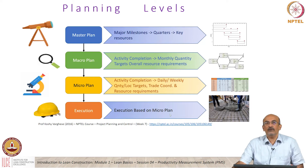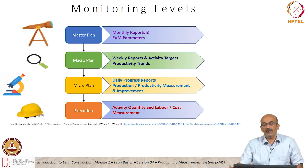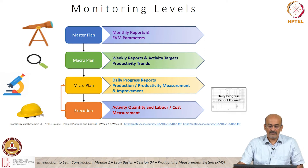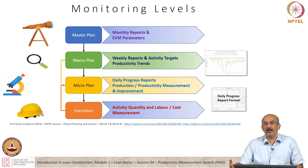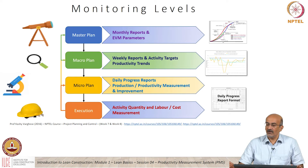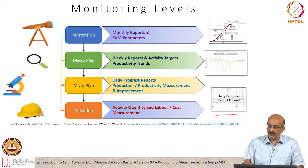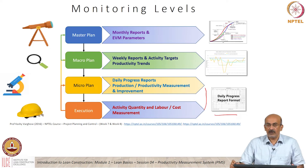When we move on to the monitoring stages, we have a similar framework, but now information flows in reverse. What happens in execution is reported via daily progress reports to the planning team at the next level, then to the macro plan level where different reports are generated, and finally to the master plan level as project-level reports. At the base level, the daily progress report captures what is happening at the work face and reports it to the site and project planning teams.